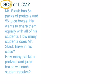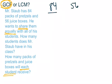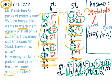If you chose GCF, you are correct. Here's why: we see the keyword 'share' and 'equally with all of his students,' and the second part asks how many packs of pretzels and juice boxes each student will receive — both signal GCF. Go through the steps, find the factors of 84 and 56, and find the GCF. The final answer is 28 students, and each student will receive 3 packs of pretzels and 2 juice boxes.